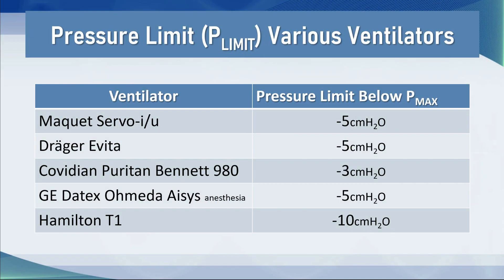This is the pressure limit for various ventilators. For the Maquet Servo I and U, it's minus five — the same for the Draeger Evita, minus five. The Puritan Bennett is minus three and the Hamilton T1 is minus ten. So if you set 30 as your Pmax on the Hamilton, the pressure limit is going to be 20 on pressure support. Be careful using the Hamilton that you give the patient enough space to get sufficient pressure support to ensure they get the tidal volume you're looking for.